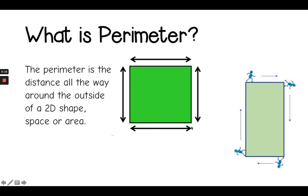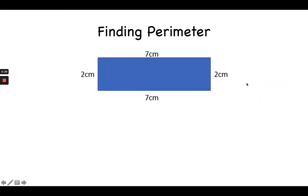The perimeter is the distance all the way around the outside of a two-dimensional shape, space, or area. If you were to walk the edge of your playground, you are walking the perimeter of your playground.